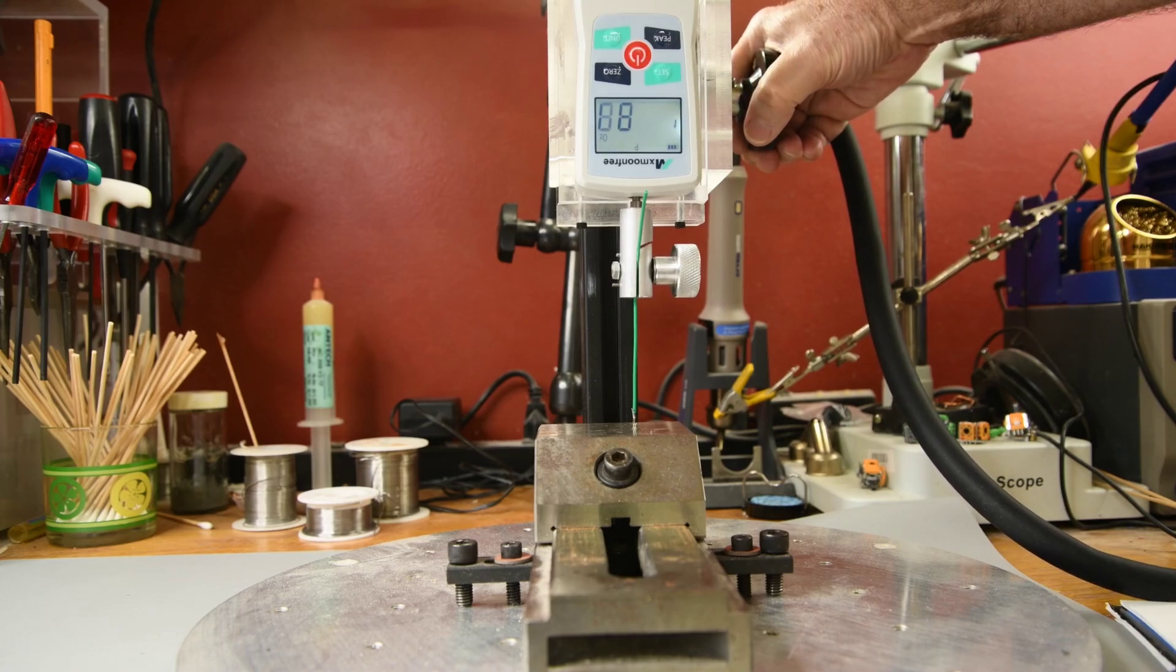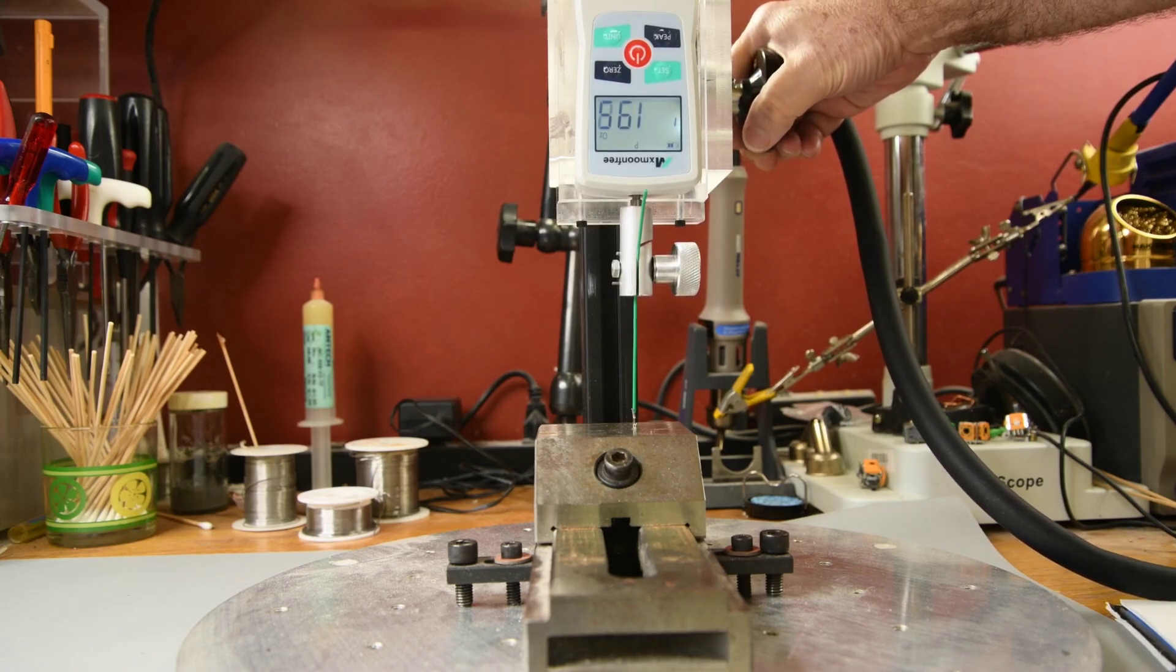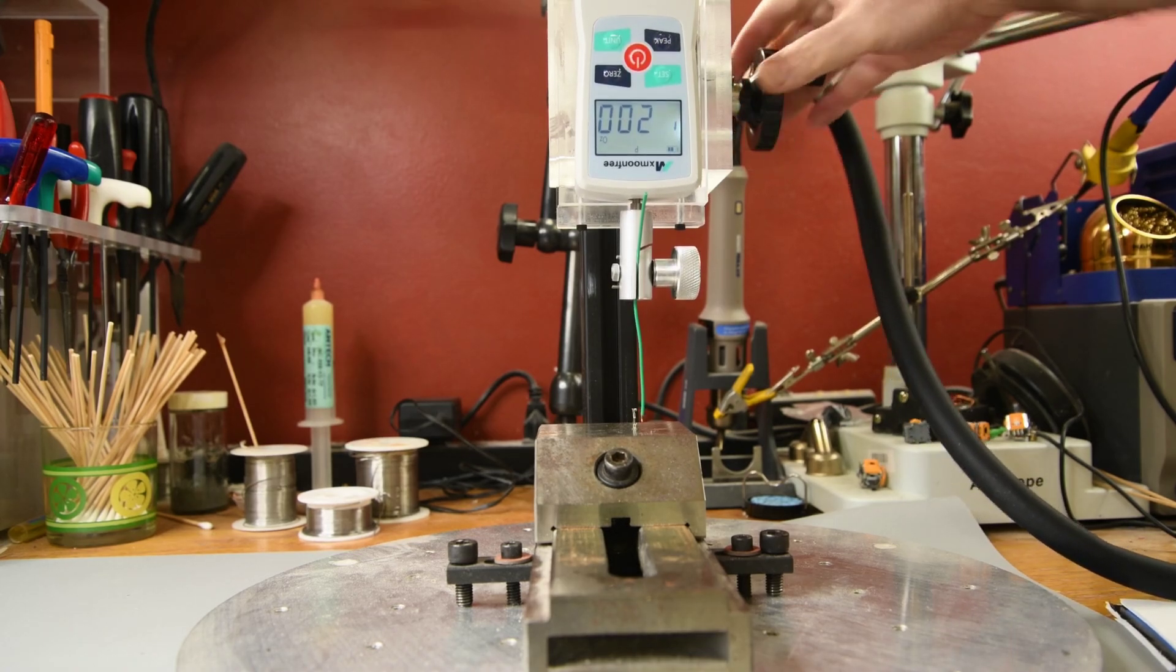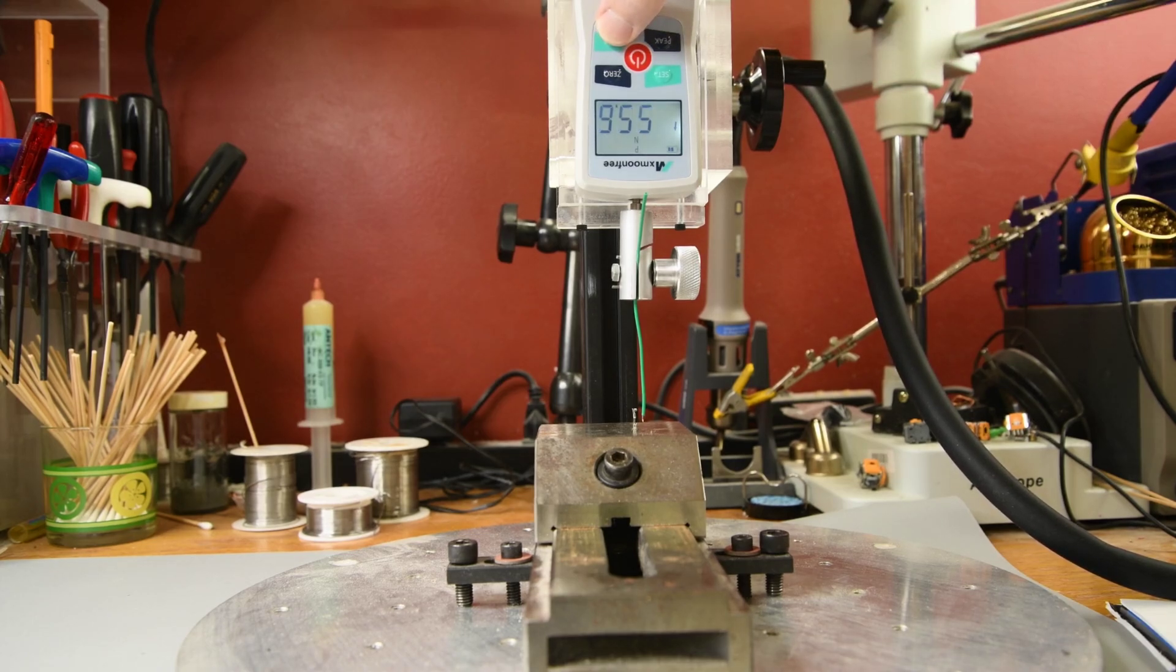And the terminal with 22 gauge wire? 200 ounces, 12.5 pounds. Now that was a really good crimp. I will add that the wire pull out force on these terminals does have a lot to do with the crimping force. But that 200 ounces is very good for the amount of force I applied to the crimp.